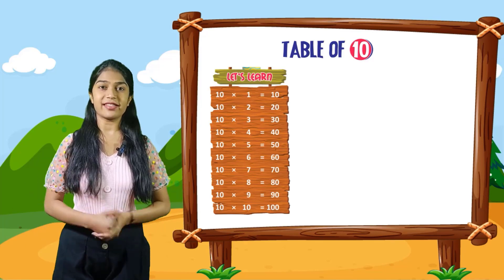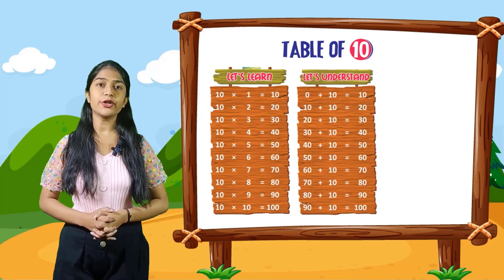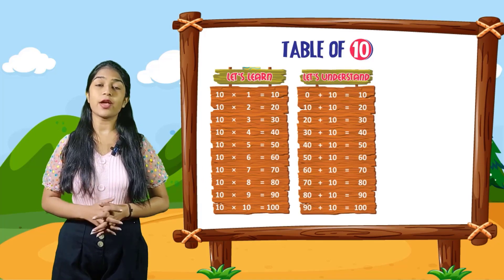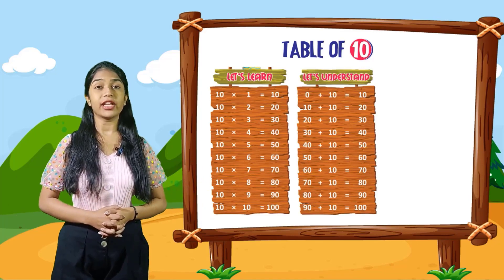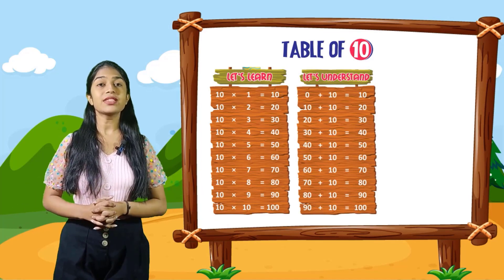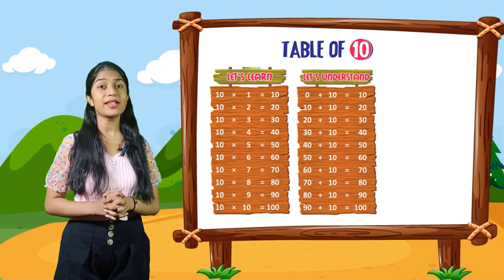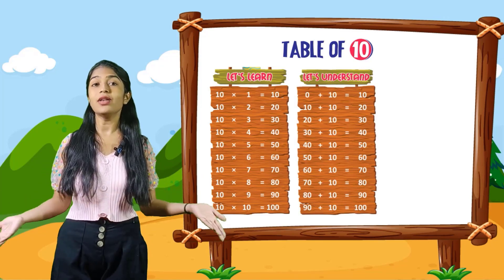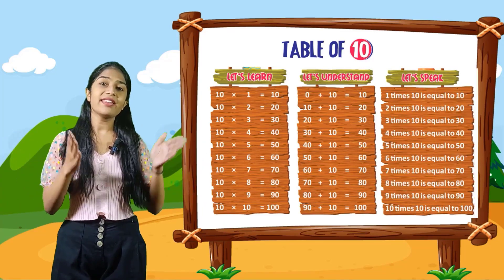So now let's understand. 0 plus 10 is equal to 10. 10 plus 10 is equal to 20. 20 plus 10 is equal to 30. 30 plus 10 is equal to 40. 40 plus 10 is equal to 50. 50 plus 10 is equal to 60. 60 plus 10 is equal to 70. 70 plus 10 is equal to 80. 80 plus 10 is equal to 90. 90 plus 10 is equal to 100.